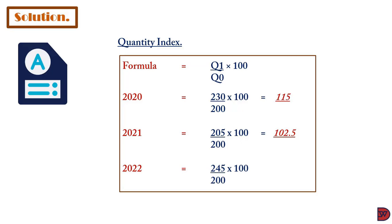For 2022, the quantity is 245 divided by 200, multiplied by 100, giving a quantity index of 122.5. The quantity jump from 2019 to 2020 is higher than that from 2019 to 2021, but the change from 2019 to 2022 is the most significant.